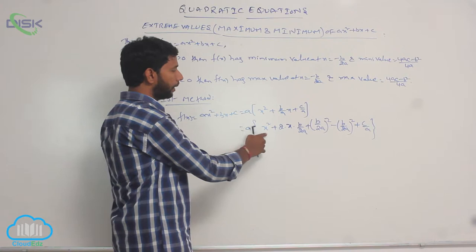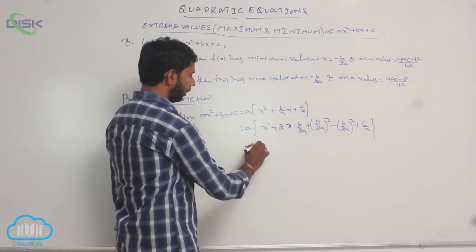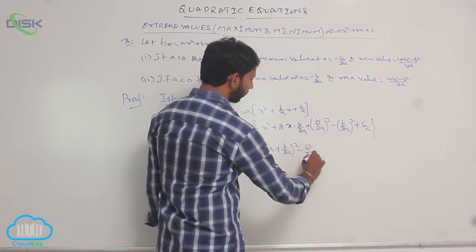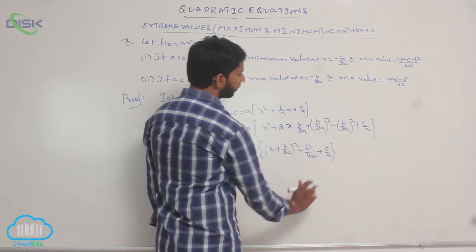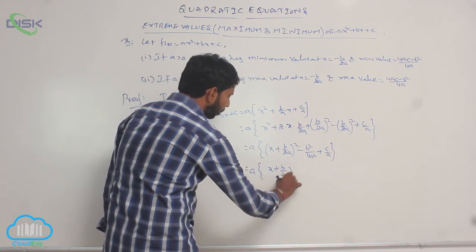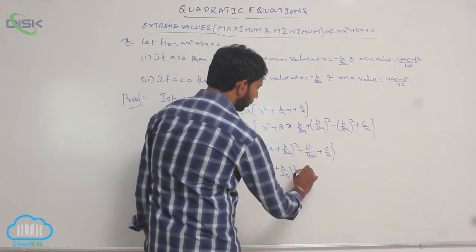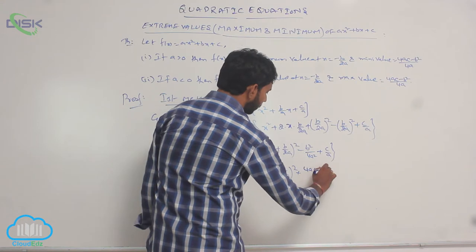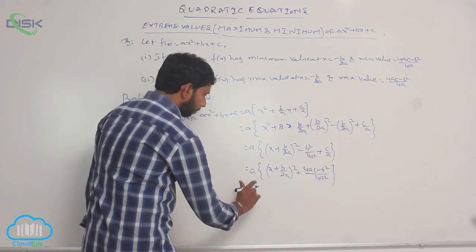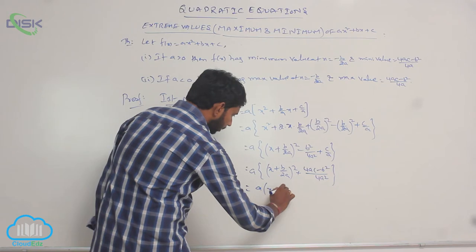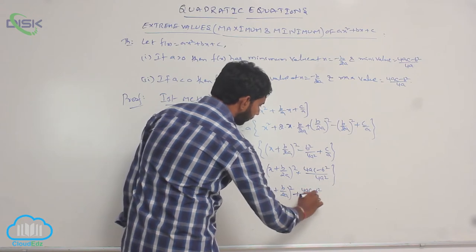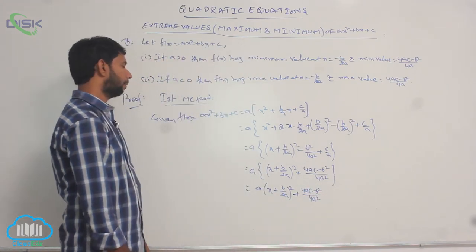The first three terms are of the form a² + 2ab + b², that is a of (x + b/2a)² minus b²/4a² + c/a. That equals a of (x + b/2a)², and taking the LCM of the last two terms gives (4ac minus b²) by 4a². Multiplying with a gives a of (x + b/2a)² plus (4ac minus b²) by 4a.